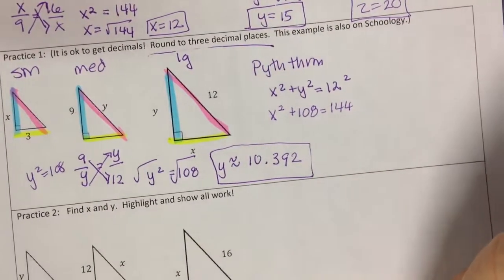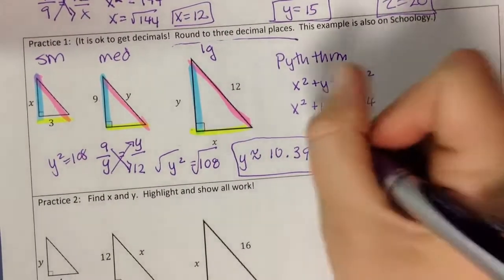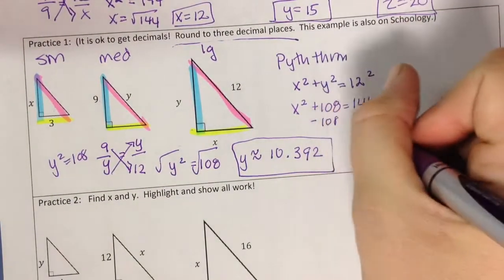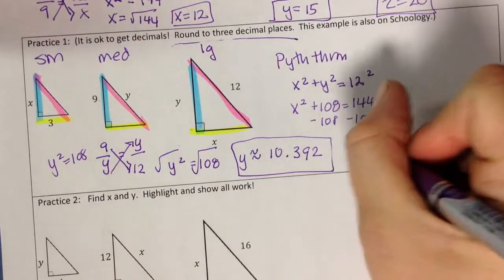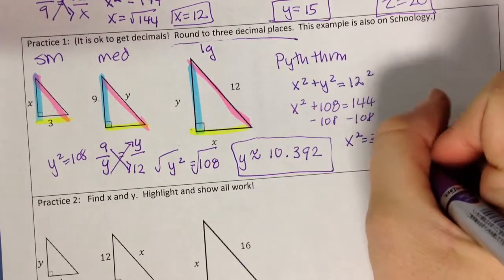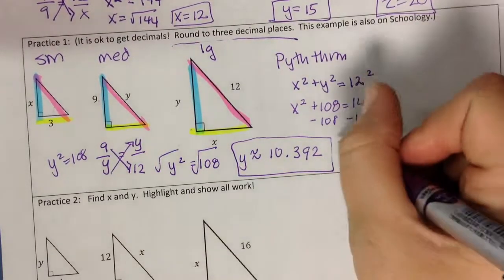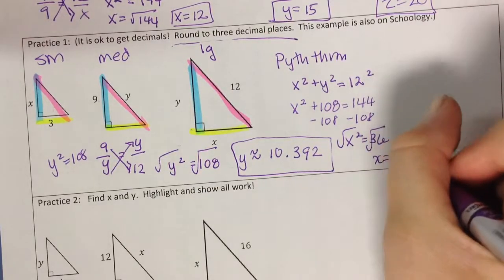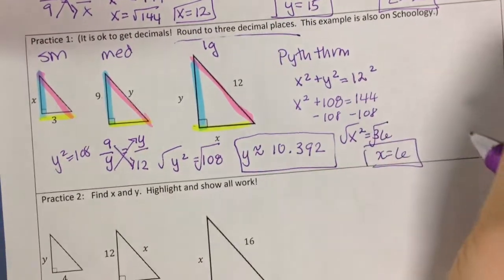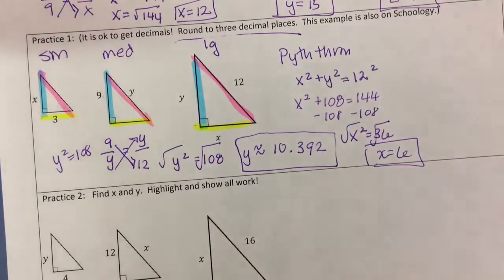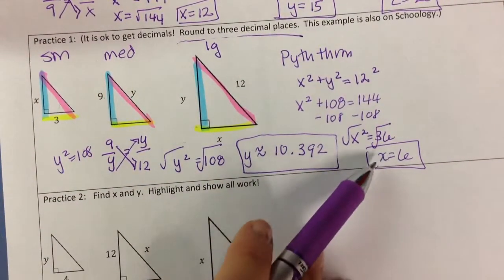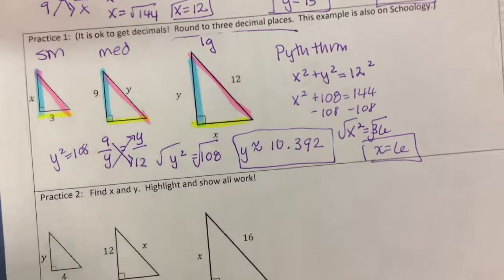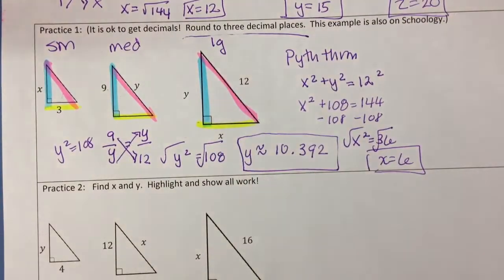And now we can just solve this quadratic by kind of working backwards. Subtract 108 on both sides. So 144 minus 108 is 36. So you get x squared equals 36. And then if I take the square root of both sides, I get that x is equal to 6. And again, we said we only want the positive value in this case because we only want the positive value because it's a triangle and it's not going to have a negative side length.